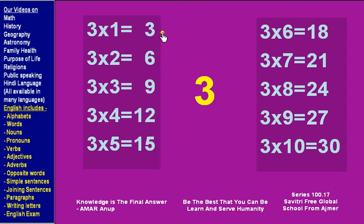3 times 1 is 3, 3 times 2 is 6, 3 times 3 is 9, 3 times 4 is 12, 3 times 5 is 15.